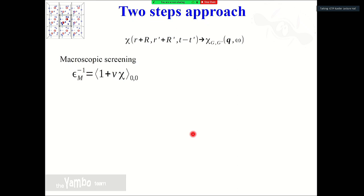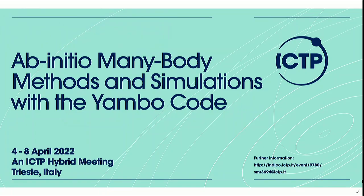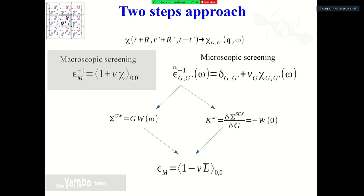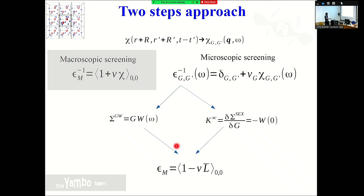The approach was based on taking the response function, starting from the DFT calculation, going into G-space, doing macroscopic averaging, and getting a macroscopic dielectric function. This is not a good scheme. In a more refined scheme, you start from DFT, get this response function, but use it only for the screening. We have RPA screening as the starting point to build up the GW self-energy, quasi-particle corrections, and the exchange-correlation kernel of BSE — the electron interaction. In the GW case you take frequency-dependent screening; in the BSE case you take static screening.